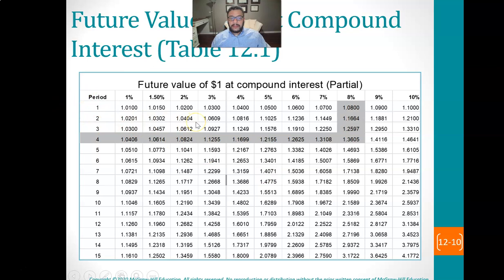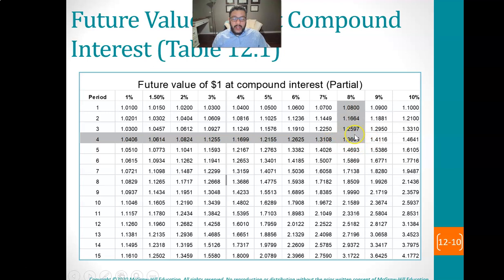Then you go to the chart and find where N and R intersect — that gives you the table factor. They call it the table factor, either the future value factor or the present value factor. I call it the magic number. You multiply this magic number times what you have now, and that tells you what the future amount is going to be.